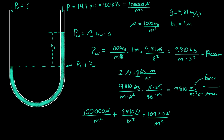So then P2, assuming this is one constant uniform fluid, P2 must equal this pressure. We're assuming the density of air is so small that it's irrelevant. So P2 is equal to about 109,810 N/m², which is 109.8 kilopascals.